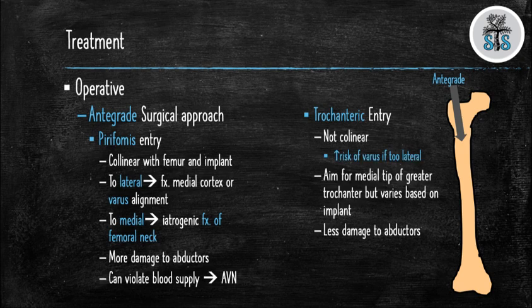If you choose a trochanteric entry point, you must realize it is not collinear with the femur. Placing the implant too laterally will cause varus alignment. Ideally, you want to aim for the medial tip of the greater trochanter, though this varies based on your implant. As noted, this starting point causes less damage to the abductors.